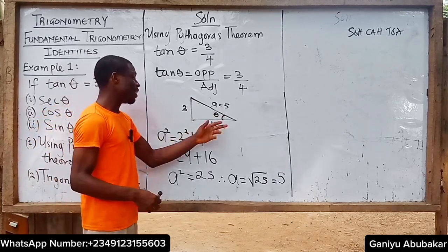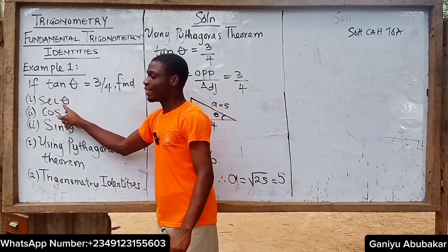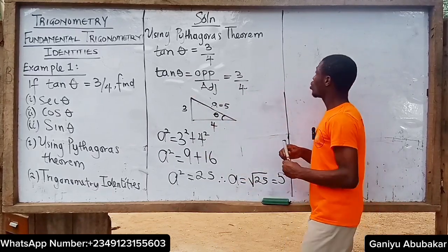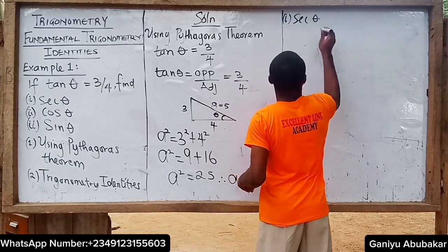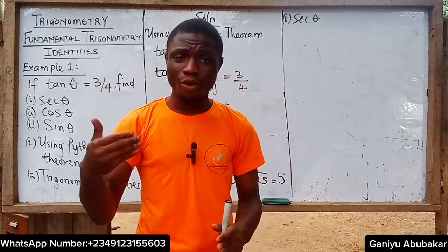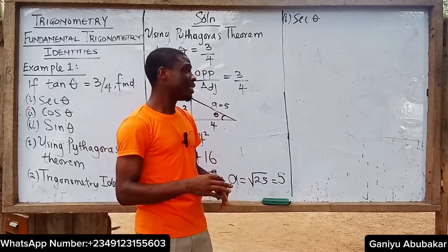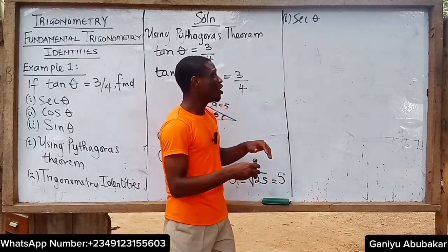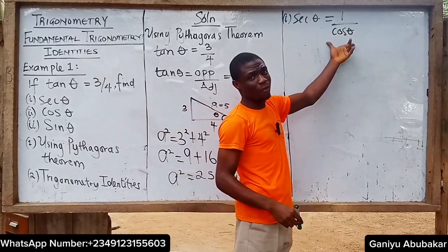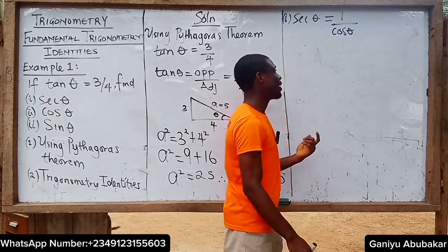So for this right-angle triangle, the hypotenuse is five, the adjacent is four, and the opposite is three. Now let's find all the required parameters. Number one: sec θ. We know that sec θ equals one over cos θ — that's what we said in the last class. So to find sec θ, I first need to find cos θ. Cos θ equals adjacent over hypotenuse.